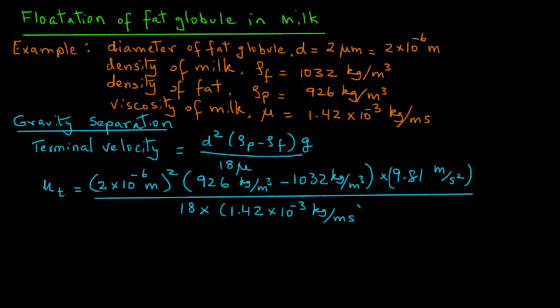Carrying out this calculation, we get the terminal velocity as −1.63×10⁻⁷ m/s. The negative sign indicates that the movement of the fat globule is in the upward direction.